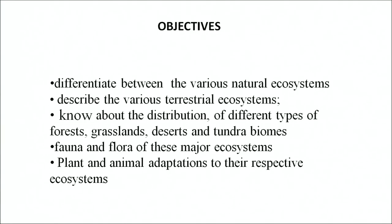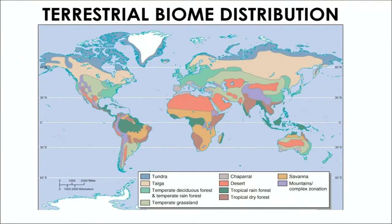The objectives of today's program are that after learning this, you can differentiate between the various natural ecosystems, describe the various terrestrial ecosystems, know about the distribution of different types of forests, grasslands and tundra biomes, fauna and flora of these systems, and plants and animals' adaptation to these respective ecosystems. As we have learnt in the previous program, there are two main types of ecosystems: terrestrial and aquatic.